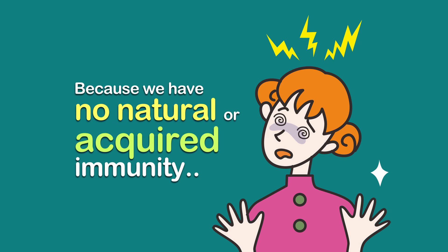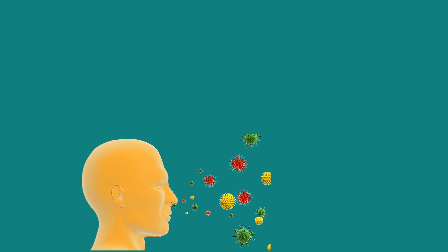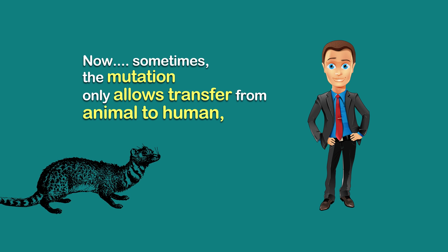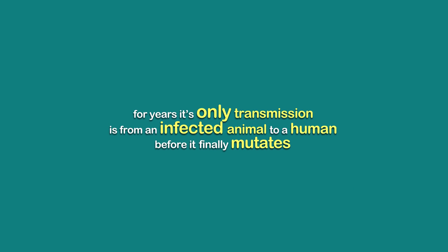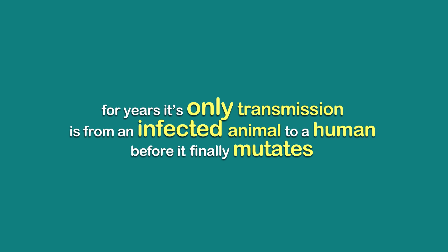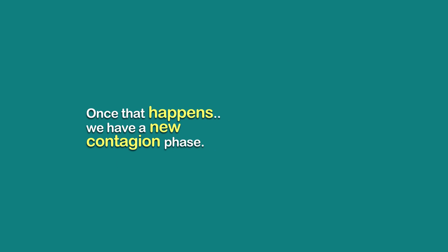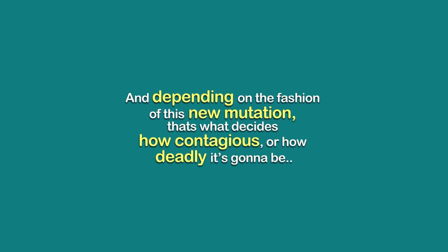The RNA sequencing of the genes inside the virus isn't human, and the human immune system doesn't recognize it, so we can't fight it off. Now sometimes the mutation only allows transfer from animal to human. For years, its only transmission is from an infected animal to a human before it finally mutates so that it can transfer human to human. Once that happens, we have a new contagion phase.